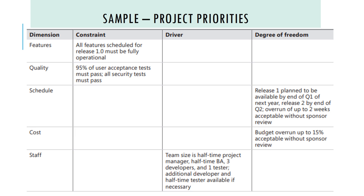For staff, the constraint is very fixed. For features, all features scheduled for Release 1 must be fully operational — the constraint is very clear.